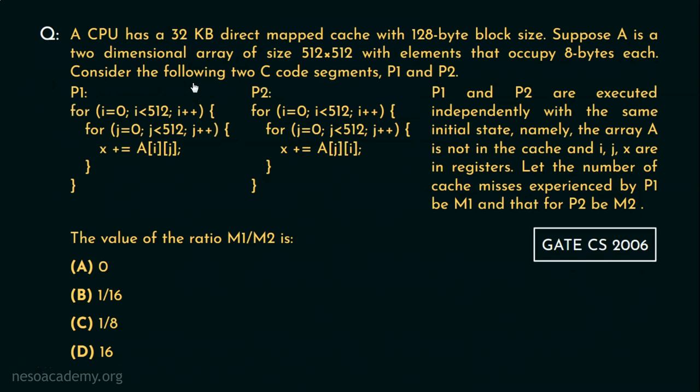Now consider the following two code segments which are written in C. So this one is P1 and this one is P2. So P1 and P2 are executed independently with the same initial state. That is the array A is not in the cache. So initially the array A is not in the cache and i, j, x are in registers. Let the number of cache misses experienced by P1 be M1. So this one when it will be executed, the number of cache misses we are terming them as M1 and that for P2 be M2.